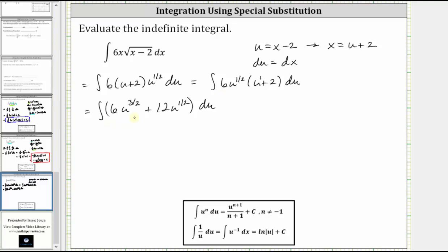And now we integrate with respect to u, which gives us six times u to the power of three-halves plus one, which is five-halves. So we have u to the five-halves divided by five-halves, which is equivalent to multiplying by the reciprocal of two-fifths. And then plus 12 times u to the power of one-half plus one, which is three-halves, divided by three-halves, which is equivalent to multiplying by the reciprocal of two-thirds.